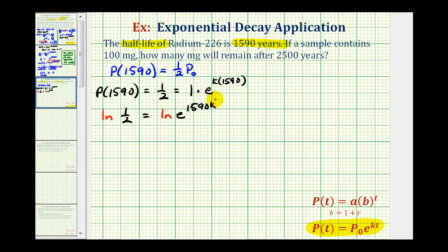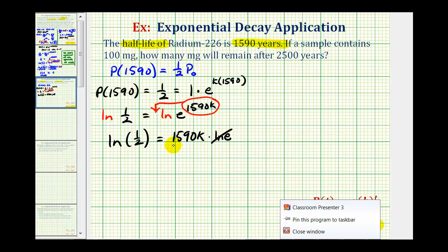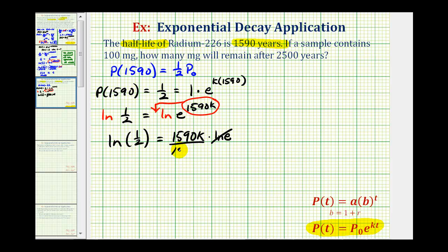Once we do this, we can apply the power property of logarithms to move this exponent to the front. So we have natural log one-half must equal 1,590k times natural log e, but natural log e is equal to one. So to solve for k, we divide both sides by 1,590.